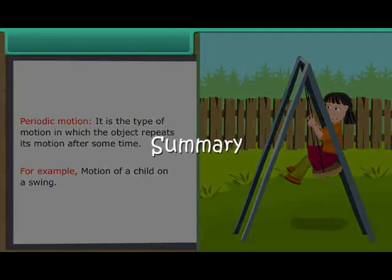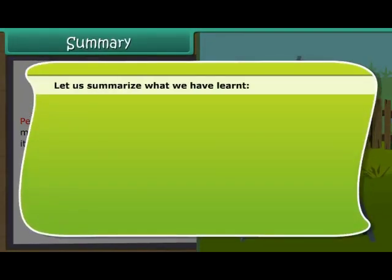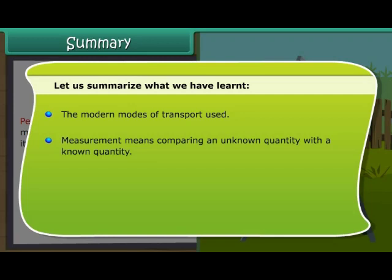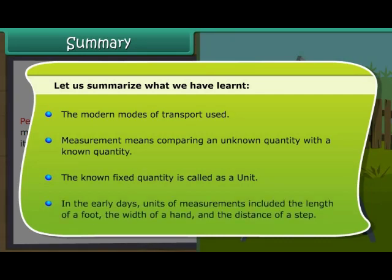Summary. Let us summarize what we have learnt. The modern modes of transport used. Measurement means comparing an unknown quantity with a known quantity. The known fixed quantity is called as a unit. In the early days, units of measurements included the length of a foot, the width of a hand and the distance of a step.